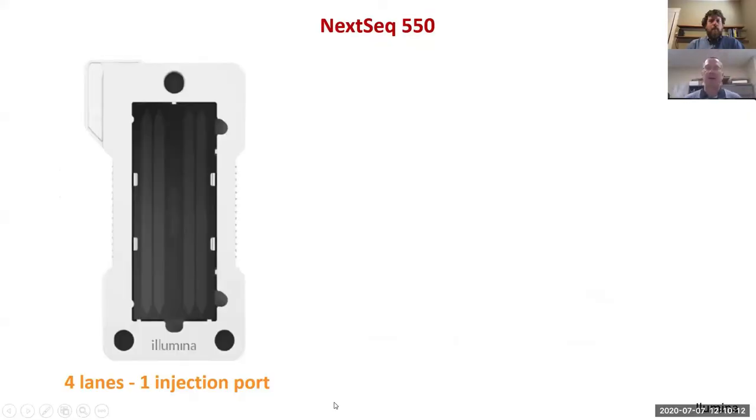A quick introduction of the instrument we have at Brown. We have an Illumina NextSeq 550, which is a benchtop sequencer. On the left you can see a flow cell which is used for the actual sequencing. There are four lanes on the flow cell. However, the flow cell has only one injection port for the fluid and sample. Each flow cell is one contained experiment in itself. You can run multiple samples if you do multiplexing, but it's only one user per experiment.